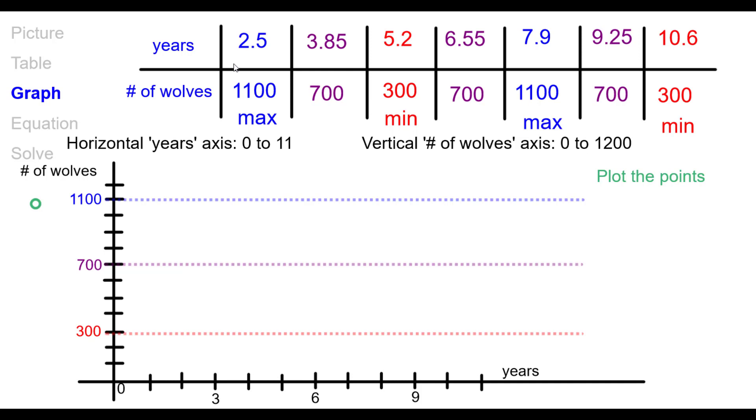And so now I can go ahead and plot these points. These are ordered pairs, years, comma number of wolves. So I'm going to go ahead and plot these points, starting with 2.5, 1100. So over 2.5, up 1100. 3.85, up 700. 5.2, 300. And so on. Next one is a point of inflection. A maximum. Point of inflection. And then a minimum. And I could have continued this table, but I thought this was enough.